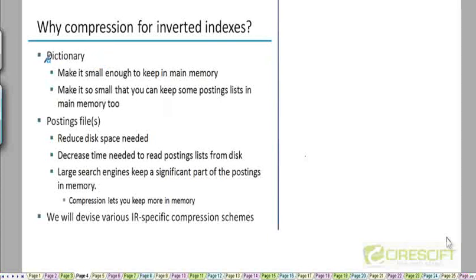So compressing the dictionary makes sense because it needs to be small enough that it can fit into main memory. And even if it is already small, it may make sense to make it even smaller so that we can use the remaining space to store postings lists in main memory. Some of the postings lists at least.